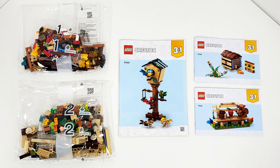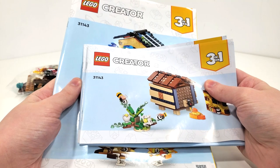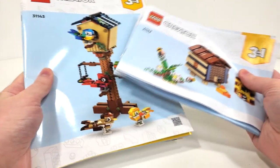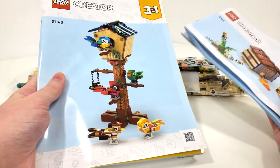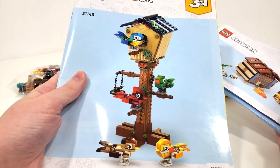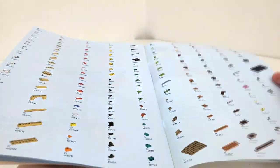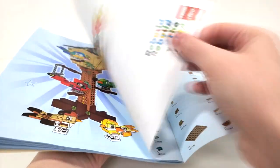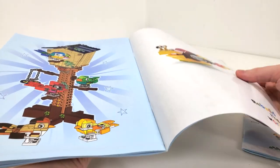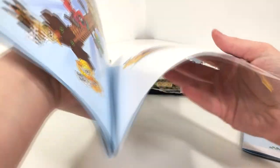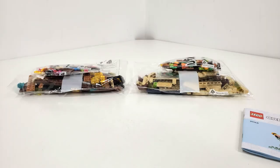Included in the box are two numbered bags, each featuring two bags apiece, in addition to our three instruction manuals, one for each alternate build. You see the same style for the foreseeable future - two smaller instructions for the alternate models and the main Birdhouse build. The other two don't feature any of the March sets, which is a little disappointing since those have already been revealed.